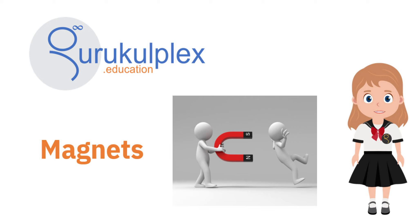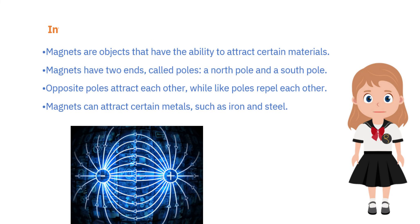Welcome to GuruKalPlex's presentation on Magnets. Magnets possess the power to draw specific materials towards them. They come with two ends known as poles — a north pole and a south pole.